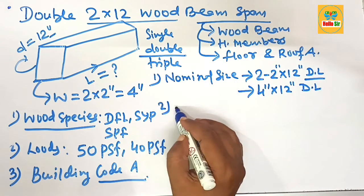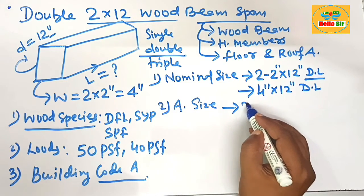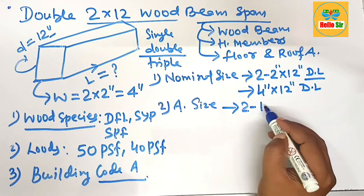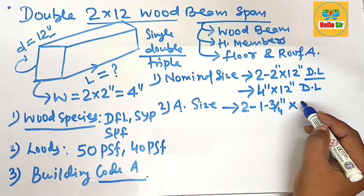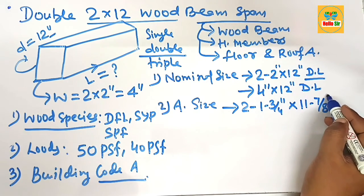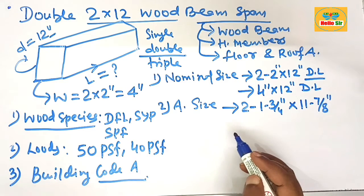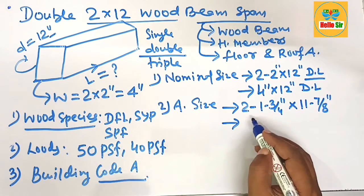What is their actual size? The actual size of this beam is 2 times 1 and 3/4 inch by 11 and 7/8 inches.